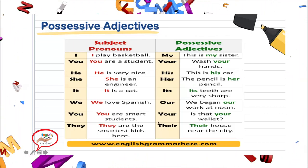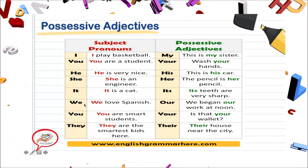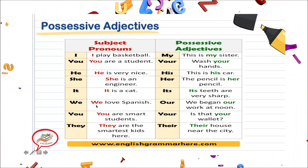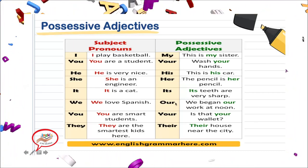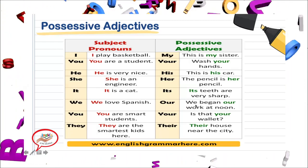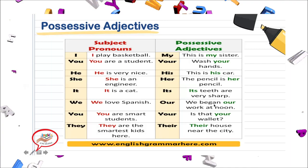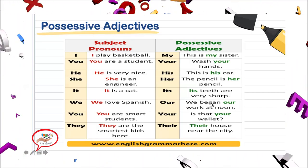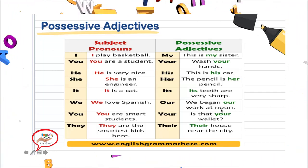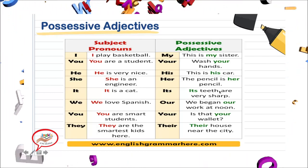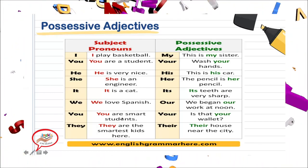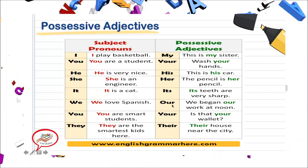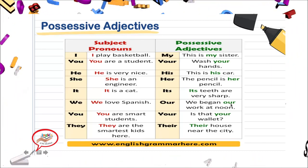Ahora vamos con los plurales. Tenemos we y tenemos our. Cuando nosotros estamos utilizando un subject pronoun que se refiera a we, vamos a poner our. As an example: we began our work at noon. Nosotros comenzamos nuestro trabajo al mediodía. Siempre que nosotros escuchemos we, vamos a guiarnos por our.